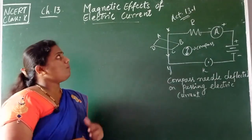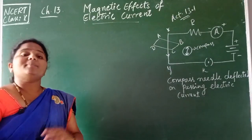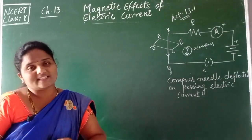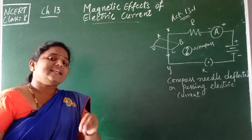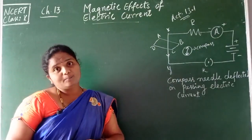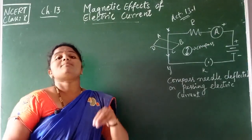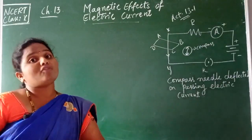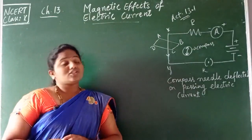Magnetic effect is one of the effects of electric current. In the previous chapter on electricity, we learned about the heating effect of electric current — when electricity is passed to a conductor, some energy is used in performing work, while the rest is dissipated as heat. That effect is known as the heating effect of electric current.